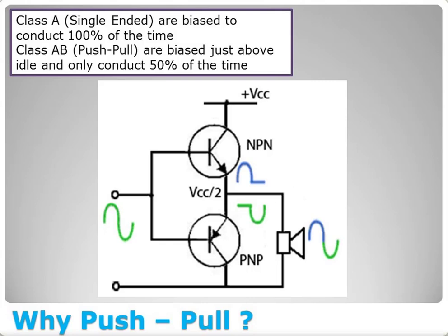Class A single-ended amplifiers are biased to conduct all the time. Biasing is basically setting the operating parameters around the tube. Push-pull amplifiers, which are typically biased Class AB, are biased just above idle — just so they don't turn off and have to turn back on — and they conduct about 50% of the time.